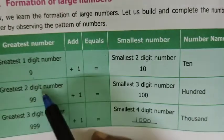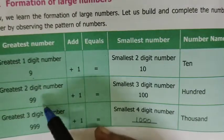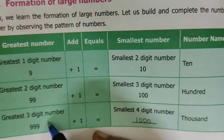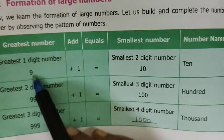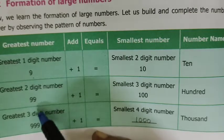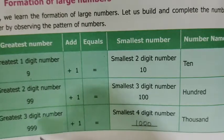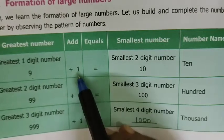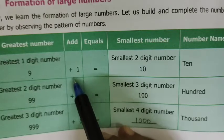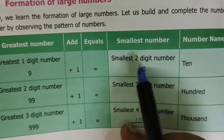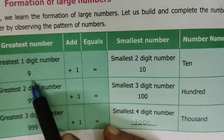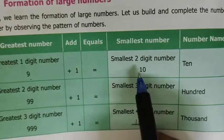The greatest numbers are: 9 (1-digit), 99 (2-digit), 999 (3-digit), 9,999 (4-digit), and so on. The next digit number always follows: 1-digit leads to 2-digit, 2-digit leads to 3-digit, 3-digit leads to 4-digit. You can add more digits in the same way.